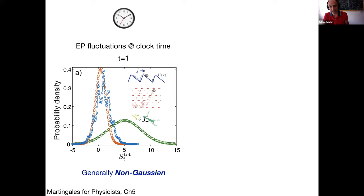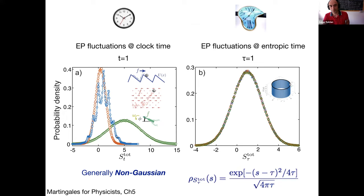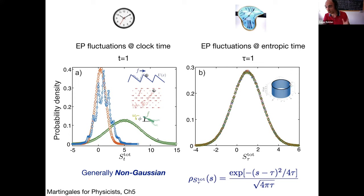This was quite remarkable to us. If you look at entropy production fluctuations at fixed time, the distribution is typically non-Gaussian — for example, a particle drifted in a periodic potential shows a distribution with peaks, also confirmed in experiments with colloidal particles, single electron boxes, etc. However, if you use entropic time and wait until entropic time reaches a given value, all these models give a Gaussian distribution of entropy production with mean one and diffusivity one.